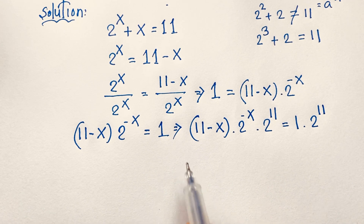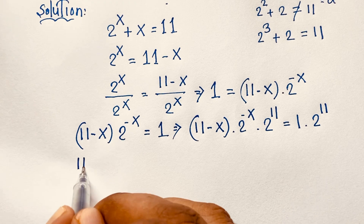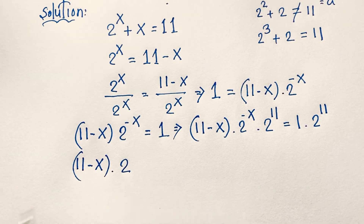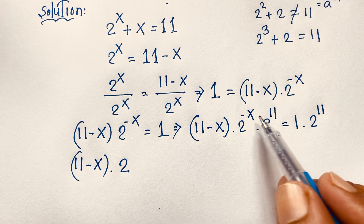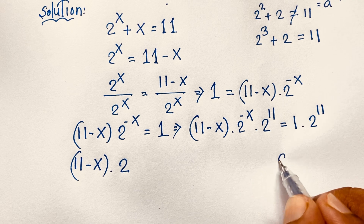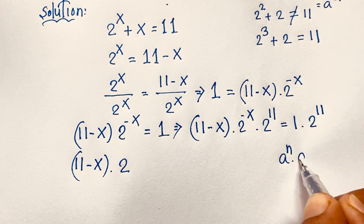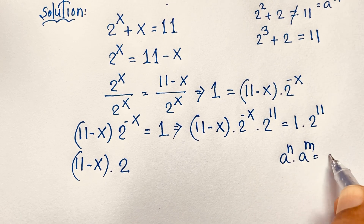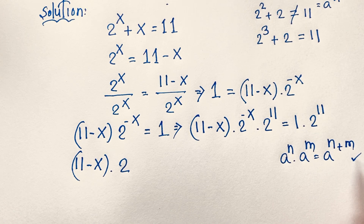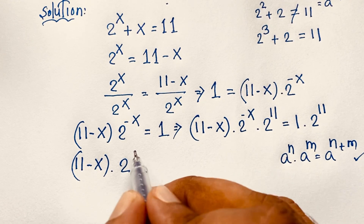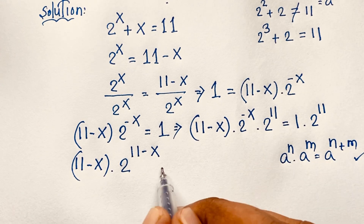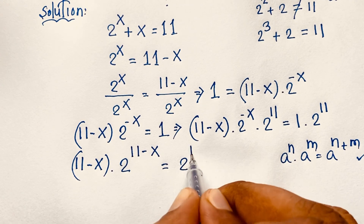Then this becomes (11 minus x) times 2^(−x) times 2^11. According to the exponential formula, a^n times a^m equals a^(n+m). Applying this formula, 2^(−x) times 2^11 equals 2^(11−x). So the expression becomes (11 minus x) times 2^(11−x) equals 2^11.